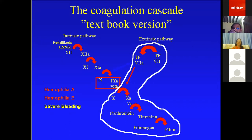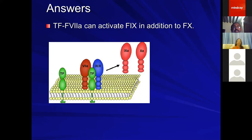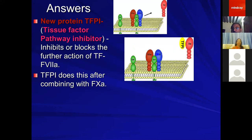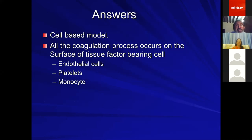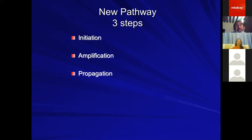Answers came in the early 1980s with the discovery that the tissue factor extrinsic pathway with factor VII can activate factor IX in addition to factor X, and the discovery of tissue factor pathway inhibitor (TFPI). TFPI blocks the further action of tissue factor and factor VII. When Xa is generated by tissue factor, it combines with TFPI and blocks the extrinsic pathway — so no further contribution comes from the extrinsic pathway. This led to the cell-based theory of hemostasis: all coagulation occurs on the surface of tissue factor-bearing cells, proceeding in three steps — initiation, amplification, and propagation.